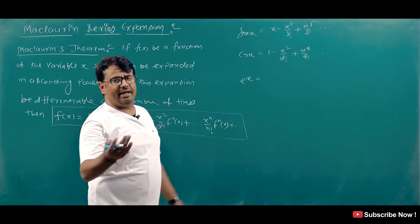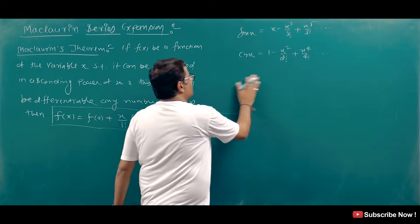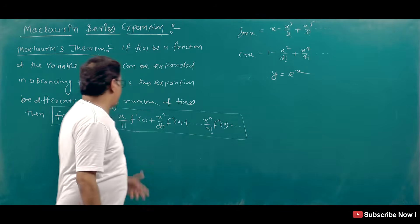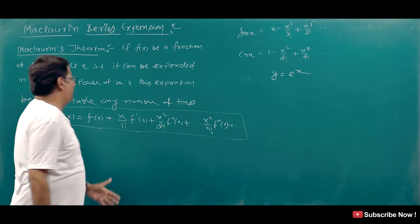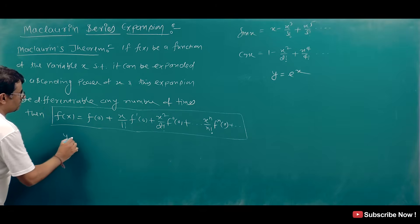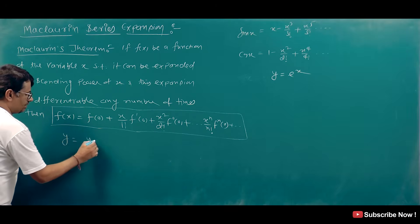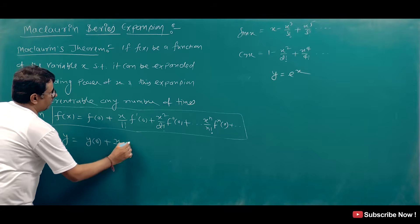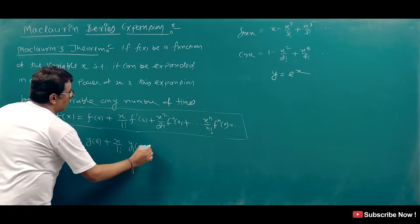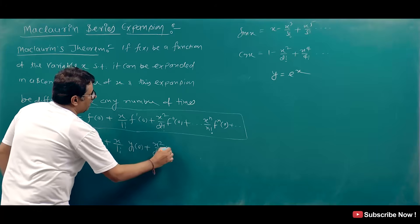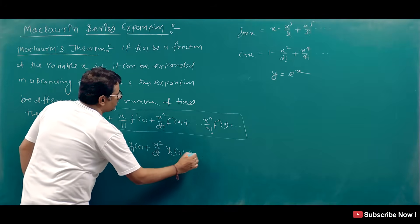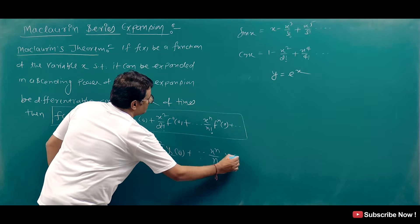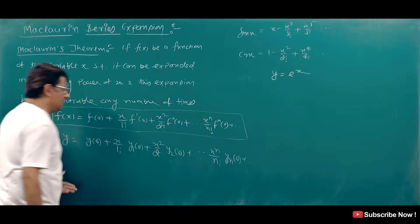If you see the e^x series, then y = e^x. We can use Maclaurin's theorem: y(0) + x/1! · y₁(0) + x²/2! · y₂(0) + ... + xⁿ/n! · yₙ(0). This is the second question.